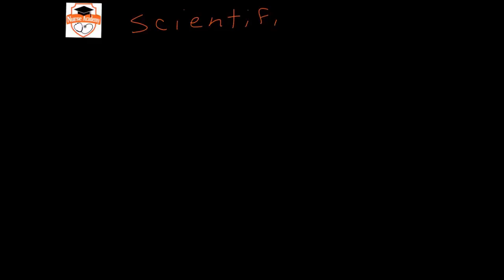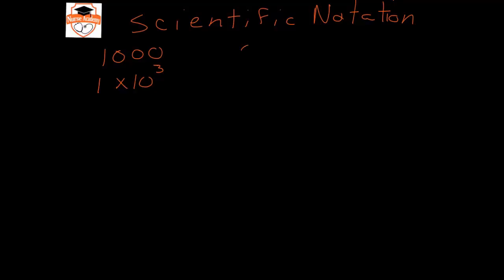This video will review scientific notation. Scientific notation is a faster way of writing numbers that have lots of zeros in them to explain their magnitude. You can write a very large number such as one thousand as one times ten to the third, or a very small number like one thousandth as one times ten to the negative three.